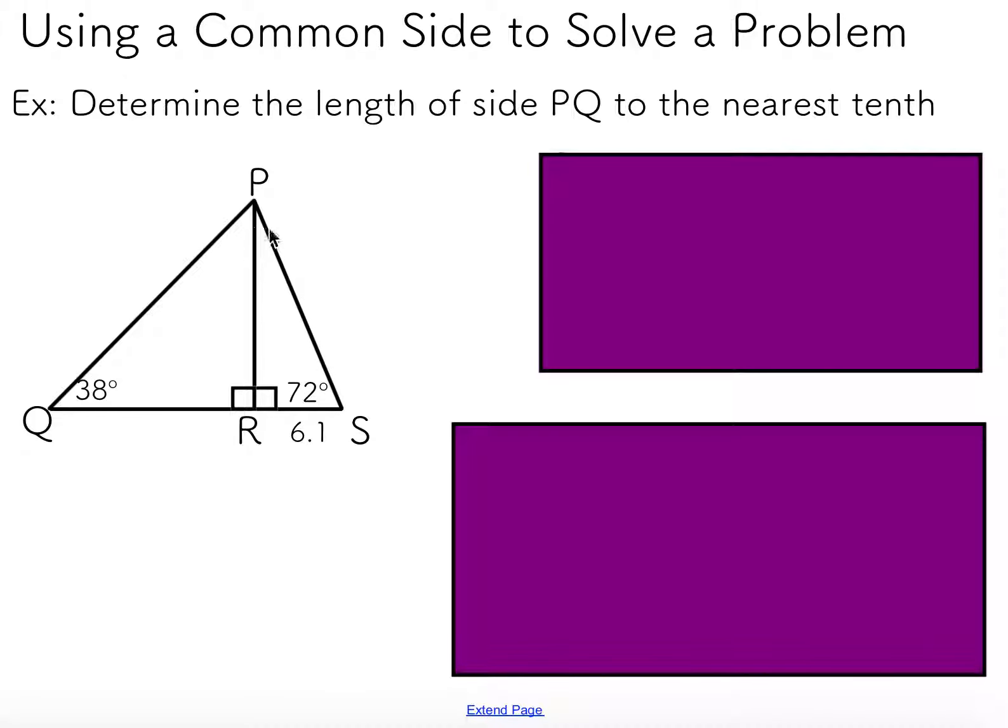The title here is Using a Common Side to Solve a Problem. If you look at these two triangles, they do have a common side, which is this guy right here. That is going to be the key to solving this problem. What I want to do is find the length of side PQ. So that's this side here.